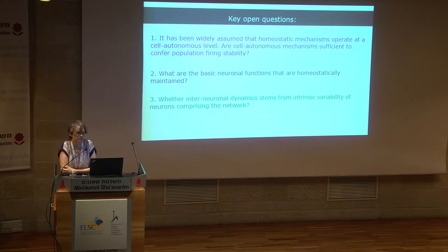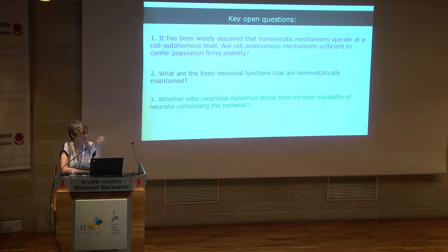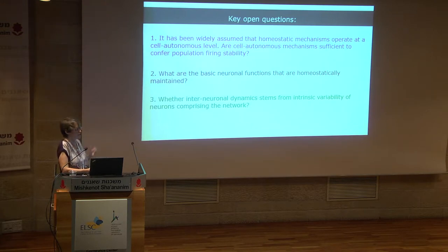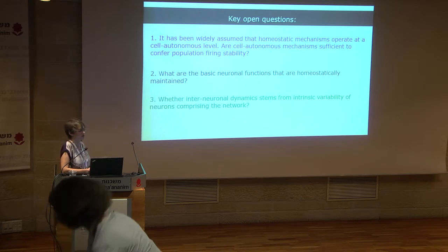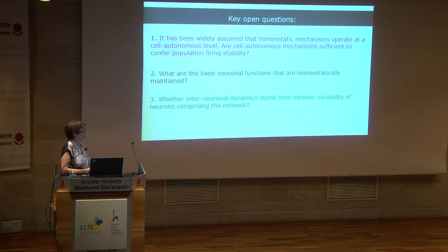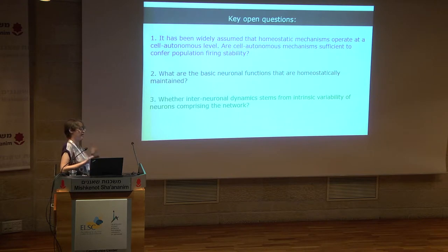Third, following the beautiful work of Yaniv Ziv, now at the Weizmann Institute, who used a miniature microscope and calcium imaging in behaving mice. He showed that at the level of place cells, the representation of space at the network level was stable, but at the level of individual single place cells it was extremely unstable over 45 days — more than 70% of neurons were completely unstable in the CA1 region. We asked: does this interneuronal dynamics stem from intrinsic variability of neurons or reflect different behavioral states or extrinsic changes?